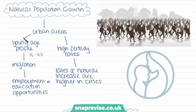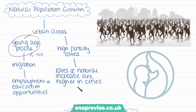Urban areas typically have a very young age profile, and because these residents are mostly between 15 and 40, they also have very high fertility rates — they are in their most fertile years. So the rates of natural increase are much higher in cities than in surrounding rural areas. For example, in London there is an area stretching from Clapham southwards to Fulham, which has been called 'Nappy Valley' because of the proportion of young families living there, all seemingly having children, and this is leading to urban growth.